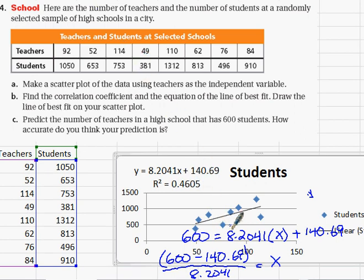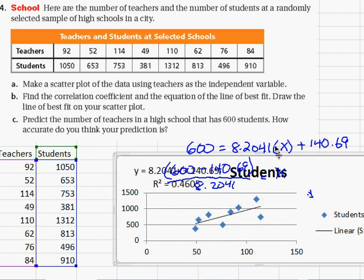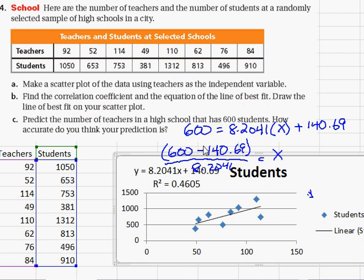We have y equals 8.2041 times x plus 140.69. So if I replace y with 600 and subtract 140.69 from both sides of the equation, and then divide both sides by 8.2041, I wind up getting x. So if I perform the calculations...